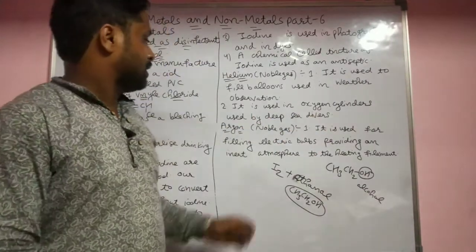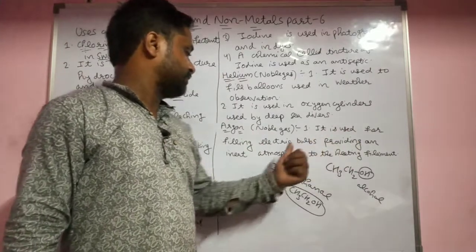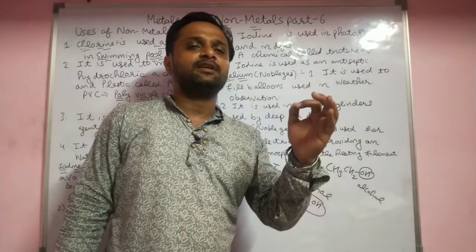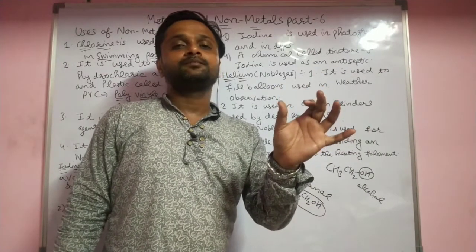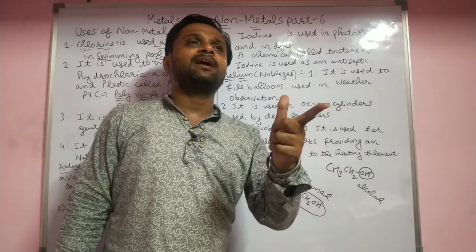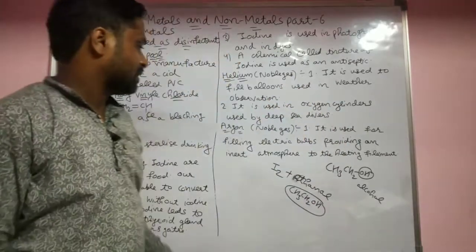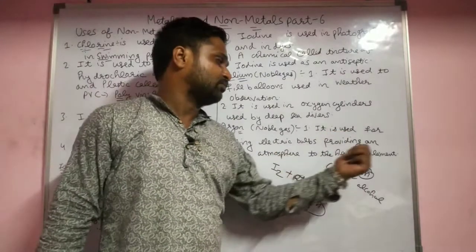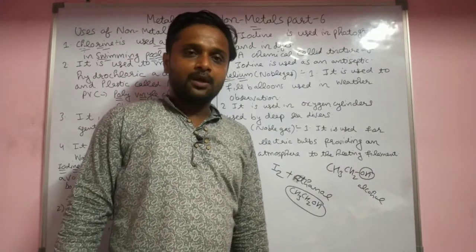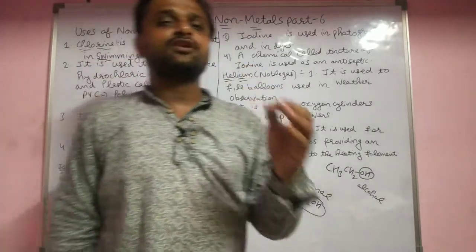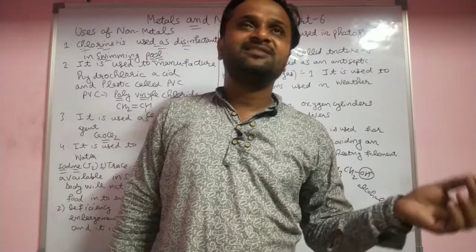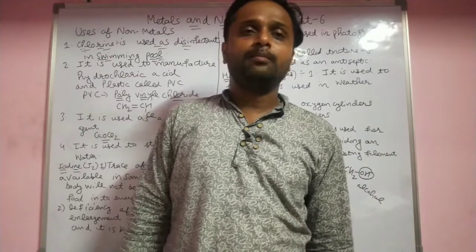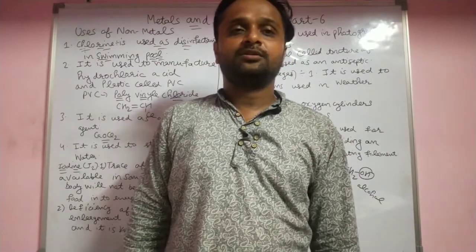Argon is also a noble gas. The electric bulb was first discovered using a carbon filament, but afterwards the tungsten filament was used to increase its life. Argon is used inside electric bulbs to provide an inert atmosphere around the heating filament. In the next lecture we will discuss alloys — an alloy is a mixture of two or more metals, or maybe a non-metal. Thank you.